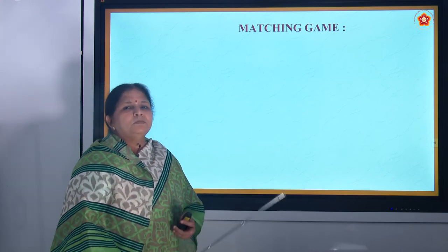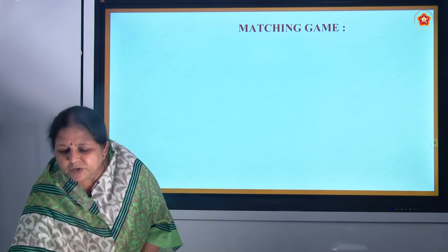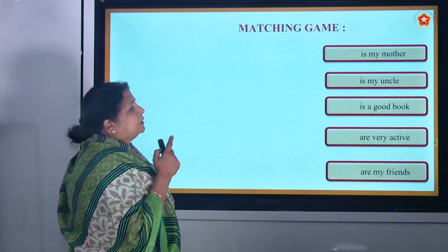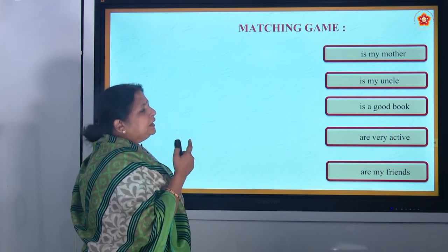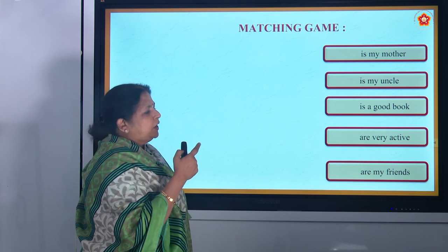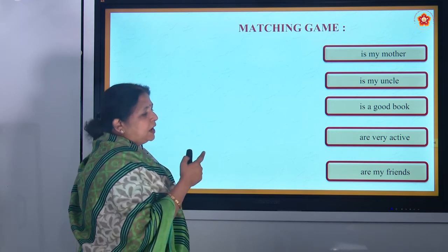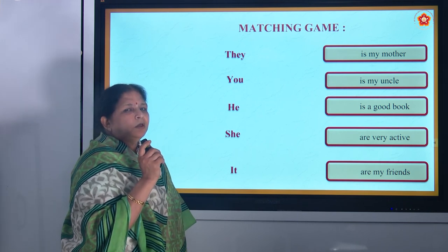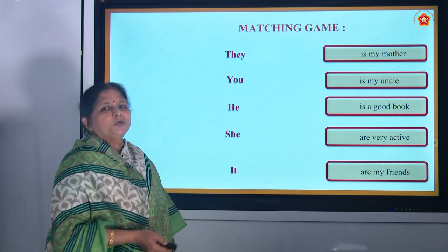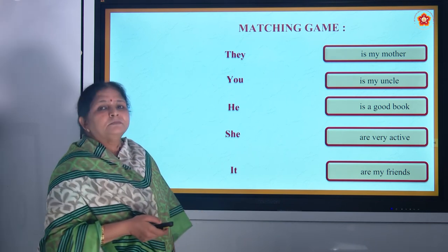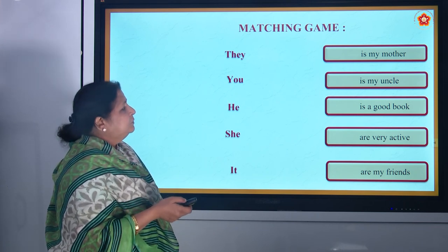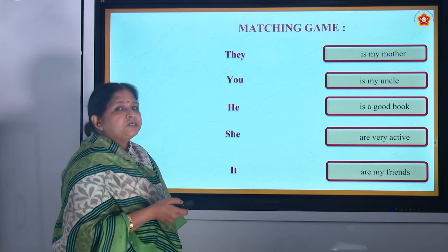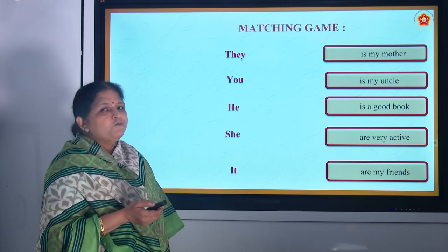Now we will do a small match-the-columns game. Write down the answers and then we will check. Dash is my mother. Dash is my uncle. Dash is a good book. Dash are very active. Dash are my friends. The words to choose from are: they, you, he, she, it. I will give you two minutes — do it.